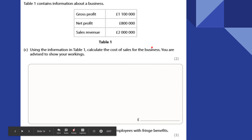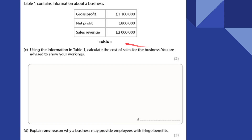Table 1 contains information about a business — calculate the cost of sales. We've got sales revenue and gross profit, so if you rearrange the formula, the missing amount is £900,000. Next: explain one reason why a business may provide employees with fringe benefits. This may develop staff loyalty, or promote better health and wellbeing — for example, a gym membership — which could result in less absenteeism, fewer days off, and therefore higher output and productivity.